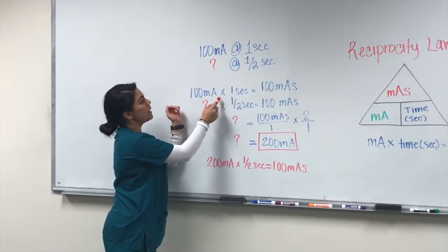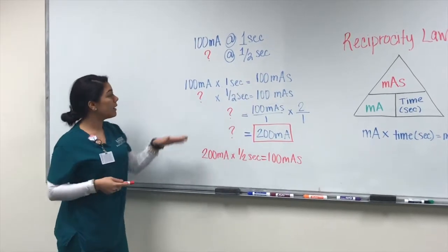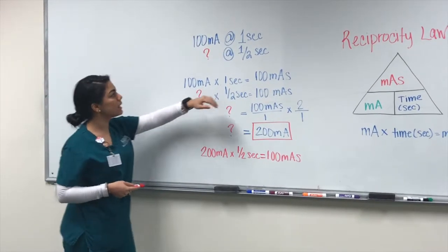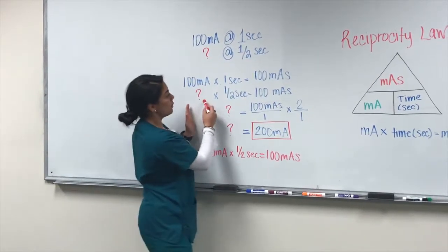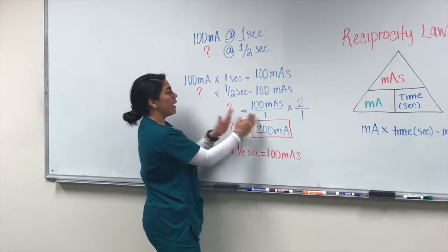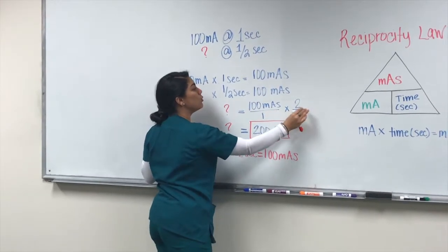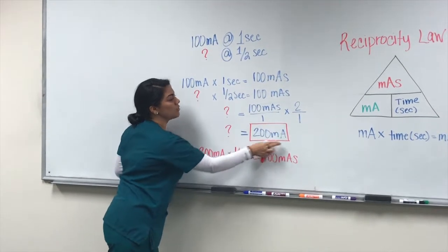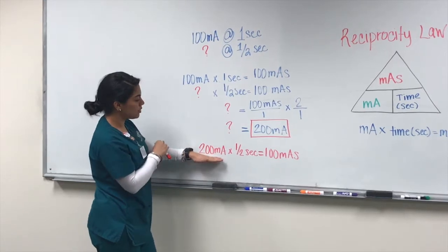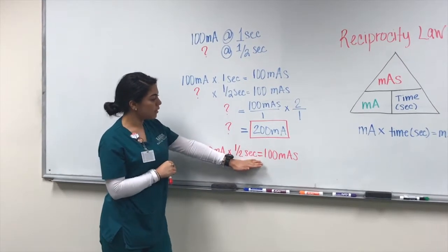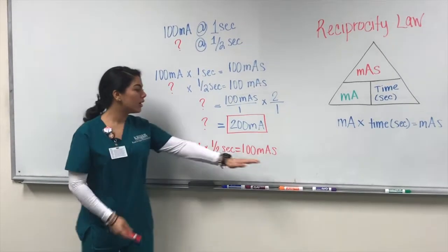First, we calculate: 100 mA times 1 second equals 100 mAs. To reduce motion, he uses a shorter exposure time of half a second. Isolating the new mA: 100 mAs divided by 0.5 seconds equals 200 mA. Plugging back in, 200 mA times half a second equals 100 mAs — confirming that this combination of technical factors gives you the same mAs you started with.